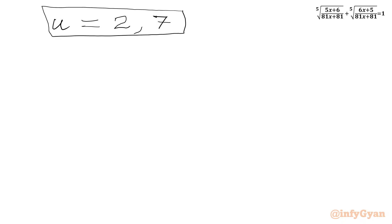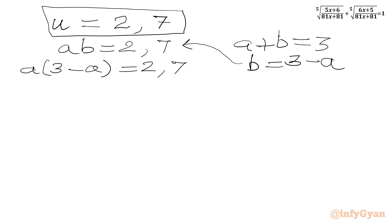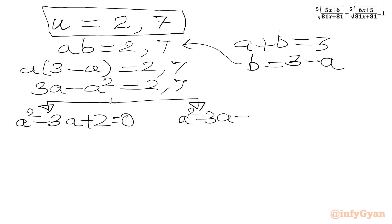Now u was our substitution for ab. So we have ab=2 or ab=7. Writing equation 1 also: a+b=3. From this I can write b=3−a and plug in: a(3−a)=2 or a(3−a)=7, giving 3a−a²=2 and 3a−a²=7. This gives us two equations: a²−3a+2=0 and a²−3a+7=0.